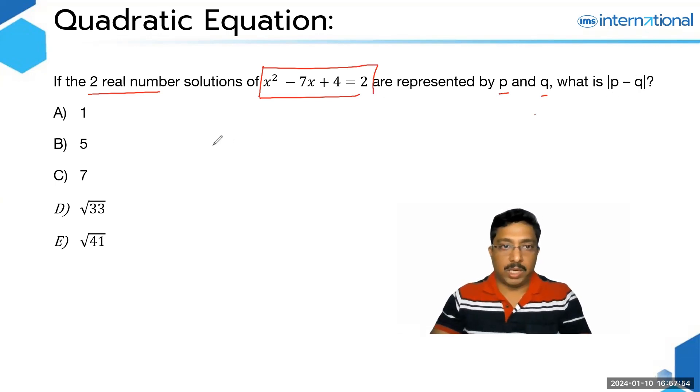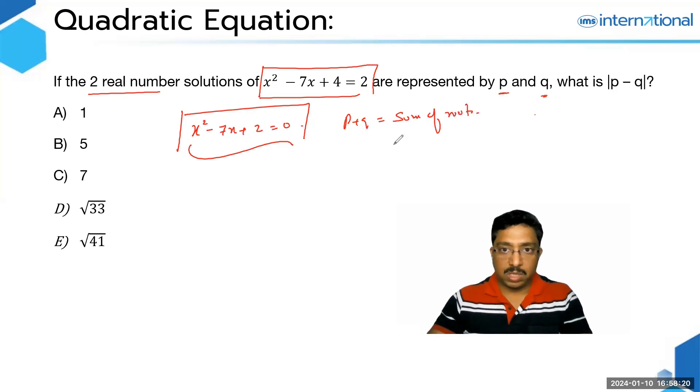So over here, we have a quadratic equation x² - 7x + 4 = 2, that we can write as 4 - 2, which is x² - 7x + 2 = 0. And to this quadratic equation, we have the roots as P and Q, which means P + Q is going to be sum of roots and PQ is product of roots.